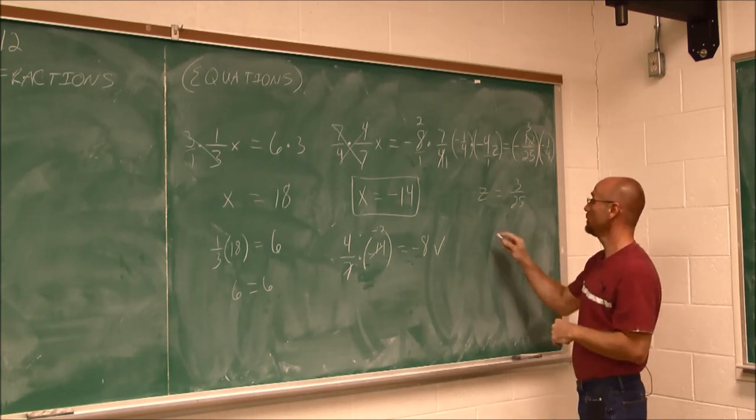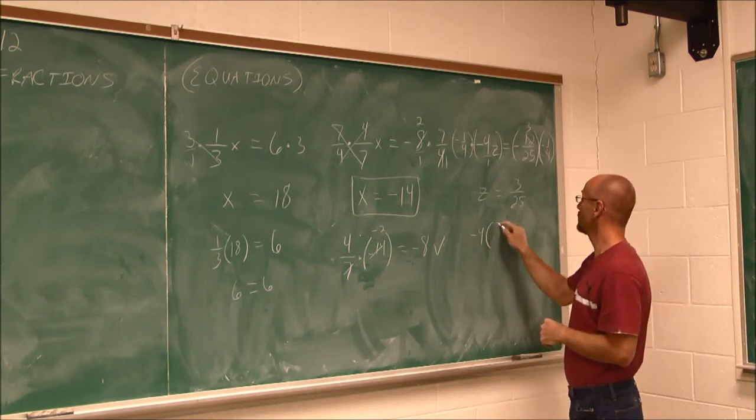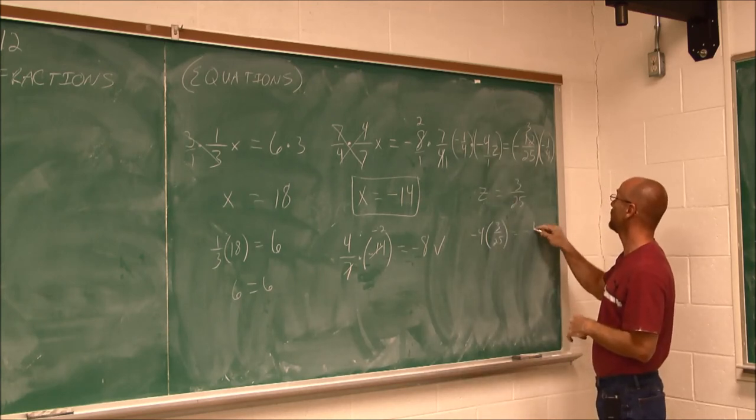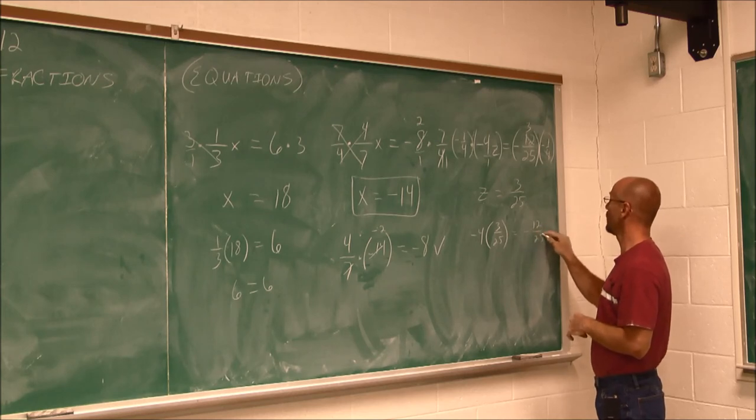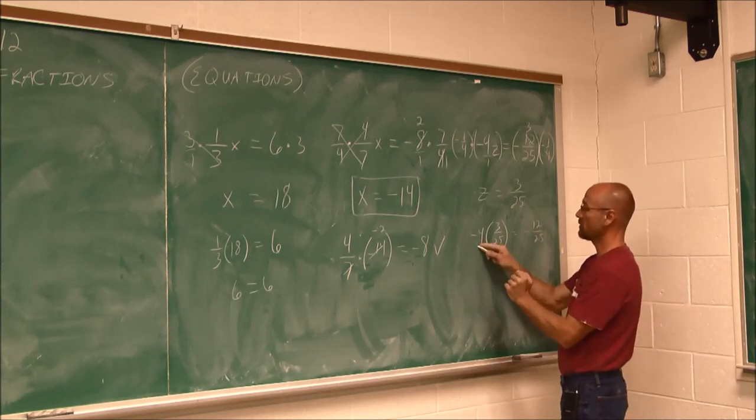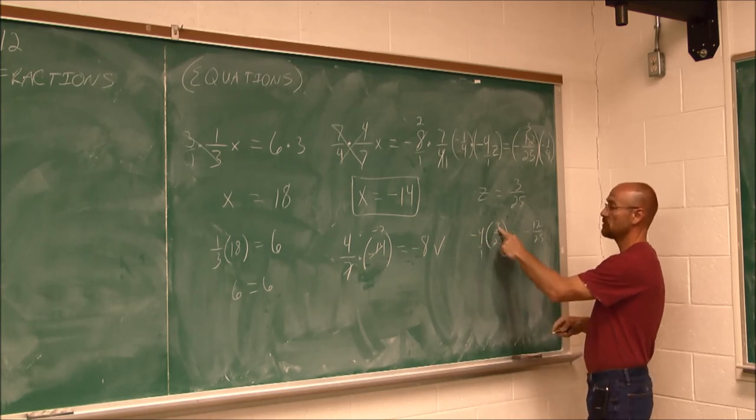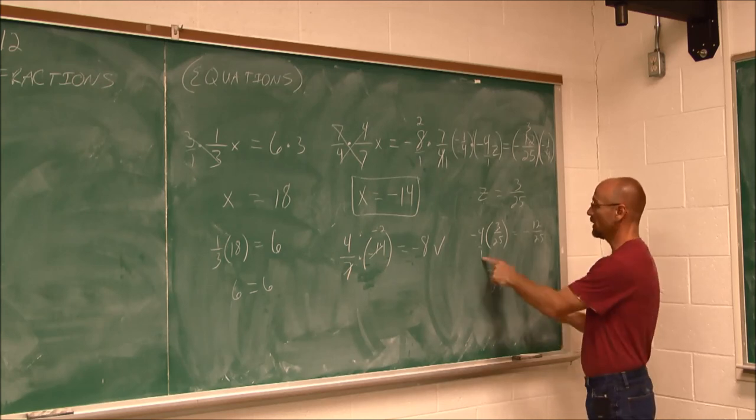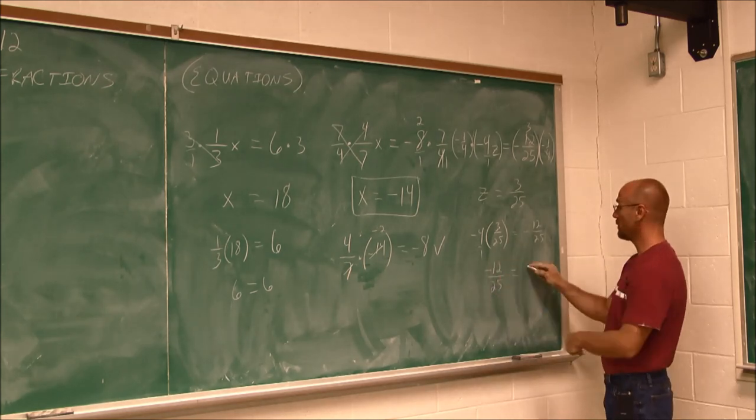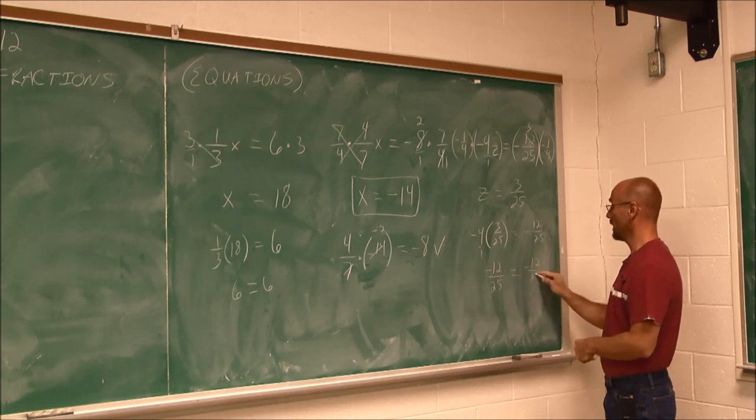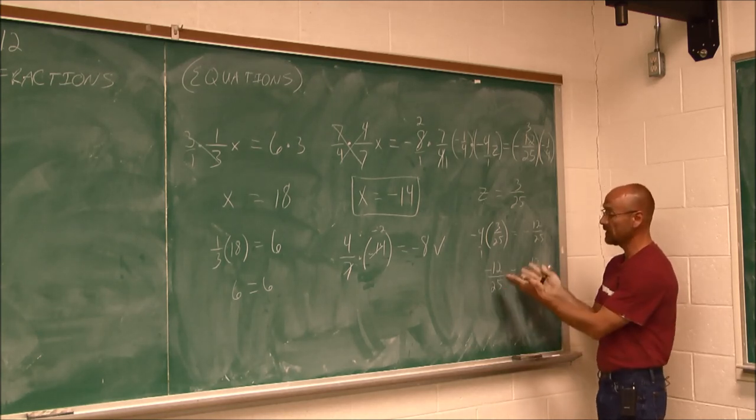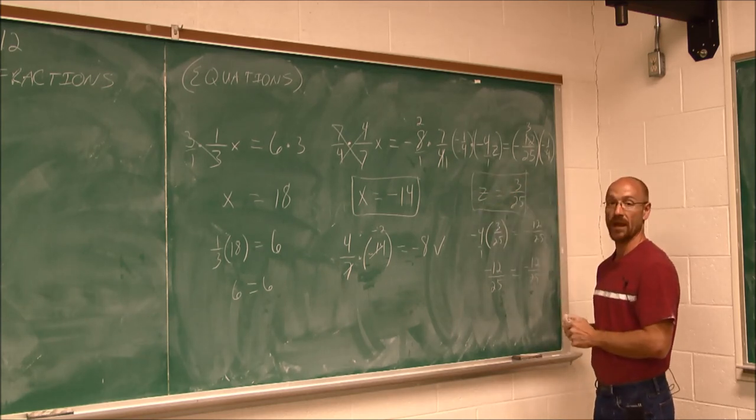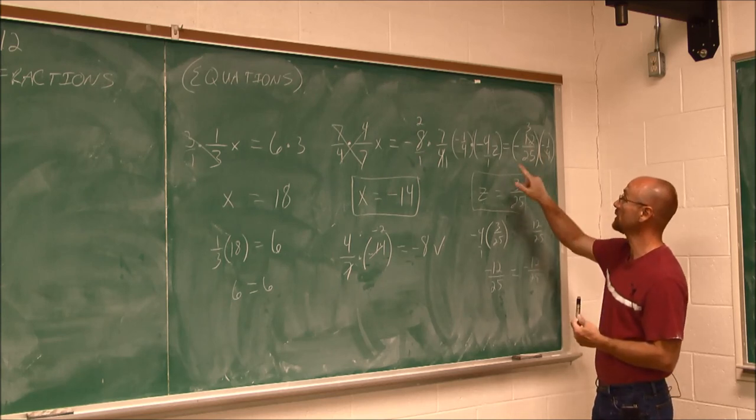Let's check our work just to be sure. Negative 4 times 3/25, evaluate for that z, has to equal negative 12/25. Let's see what happens here. We think of this as negative 4 over 1. A negative times a positive is a negative. 4 times 3 is 12. Over 1 times 25 is 25. Negative 12/25 is negative 12/25. We get that true statement. I like to call it, it is what it is, because that's what it is. So we know that this is right. So we have found the solution to this equation.